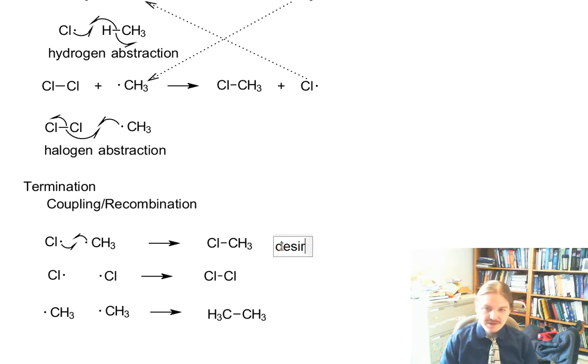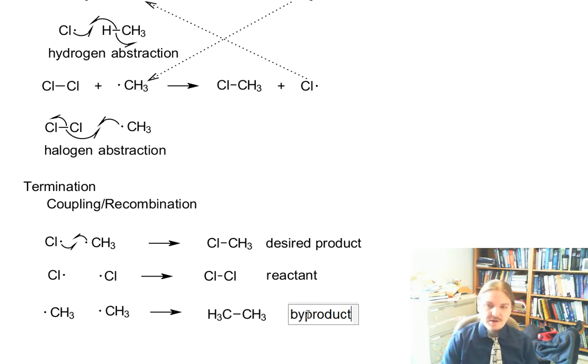So just as an example of the types of outcomes that can happen, your termination could yield your desired product, one of your reactants, or a byproduct. And byproducts are things you probably want to avoid. And so, if possible, you want to set up your reaction to avoid termination events, though this is going to happen as you run out of radicals.